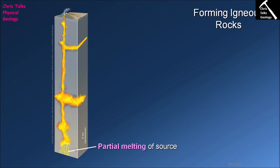When a rock is melting, it is very rare that you will melt the entire rock. Typically you will only melt a portion of that rock, and this process of only melting part of a rock is referred to as partial melting. Most magmas are the result of partial melting versus full melting. Full melting is relatively uncommon.